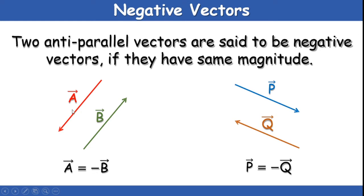Negative vectors: two anti-parallel vectors are said to be negative vectors if they have the same magnitude. If vector A and vector B are anti-parallel — moving in opposite directions — but have the same magnitude, we call them negative vectors. This is represented as A bar equals minus B bar. Similarly, P and Q are moving in opposite directions but with the same magnitude, so P bar equals minus Q bar.